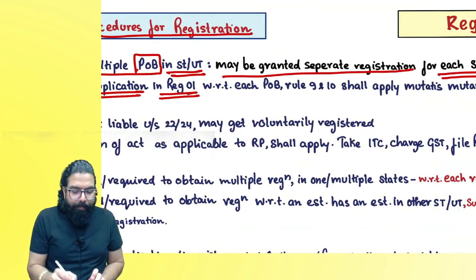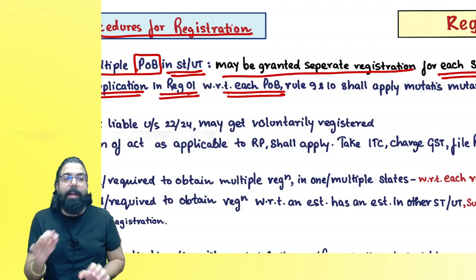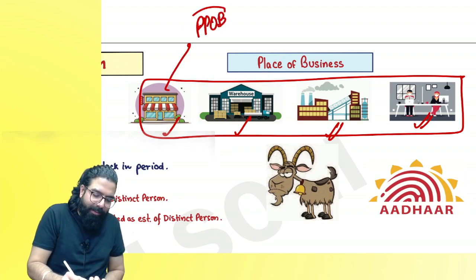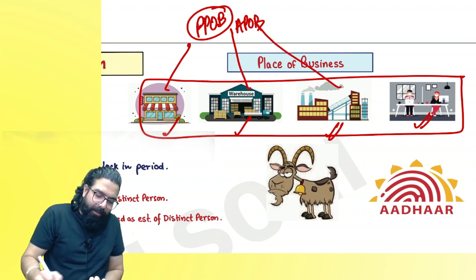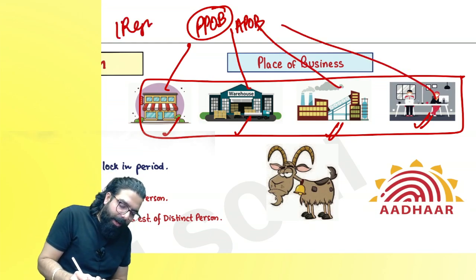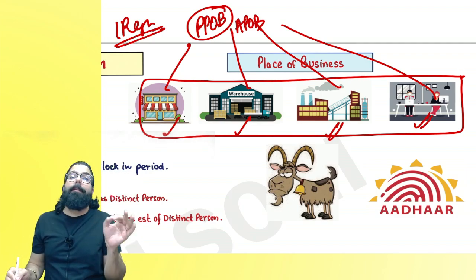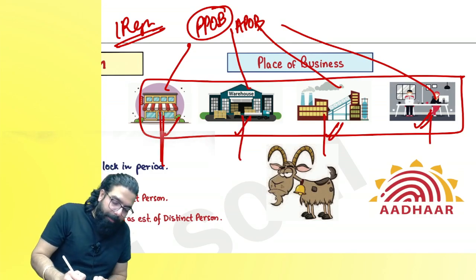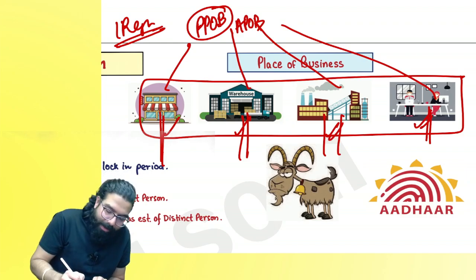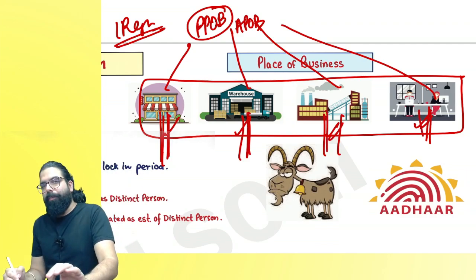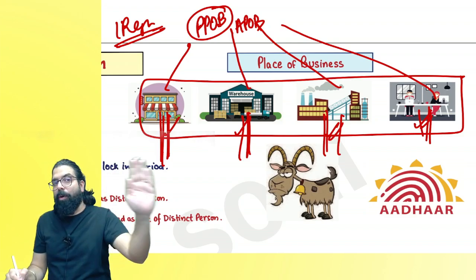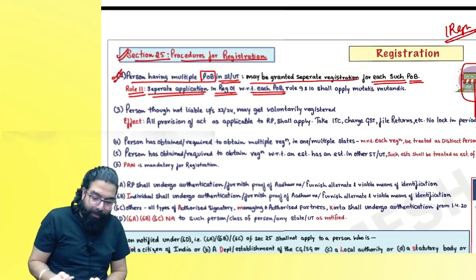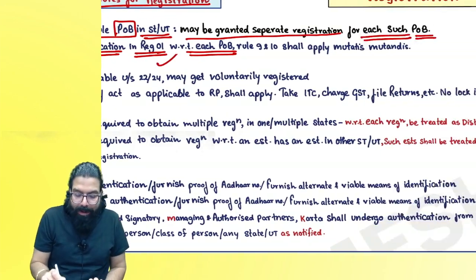Generally, in one state with four places of business, you can show one as the principal place of business and the rest as additional places under one registration. But if you want, you can take separate registrations — separate application, separate verification, and separate registration certificate for each. If you take separate registration for each place, each place of business becomes a distinct person for the other.